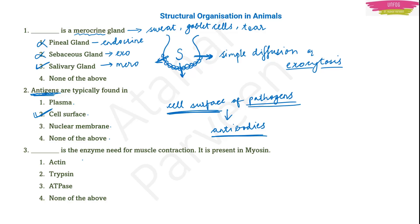Third question: dash is the enzyme needed for muscle contraction, present in myosin. Myosin and actin are types of muscle fibers present in our muscles. The options are actin, trypsin, ATPase, and none of the above. The enzyme needed for muscle contraction which is present in myosin is ATPase.